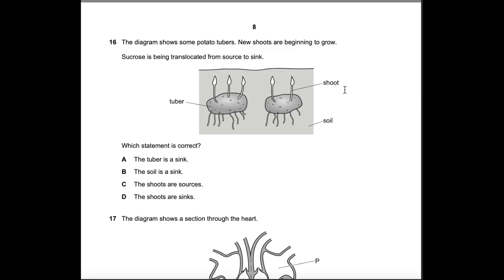Question 16: The diagram shows potato tubers with new shoots growing, and sucrose is being translocated from source to sink. The tuber is the source, not the sink. The soil is not using sucrose, so it is not a sink. The shoots are sinks because they are using sucrose from the tubers to grow. Answer: D.